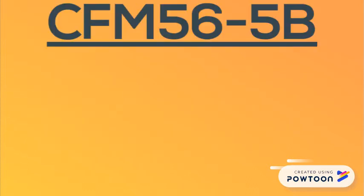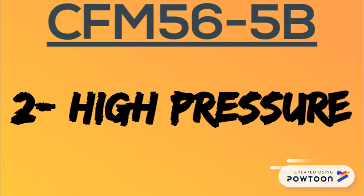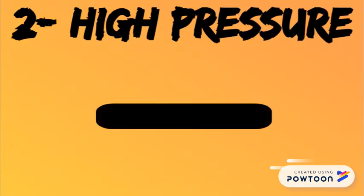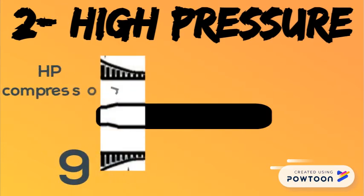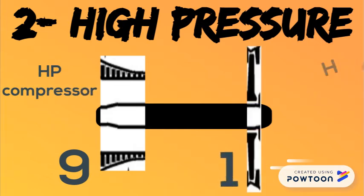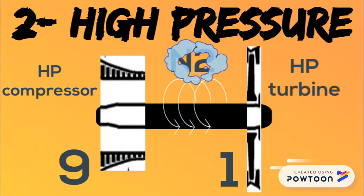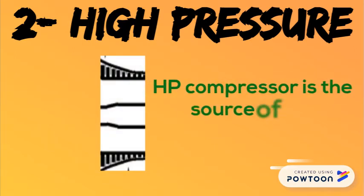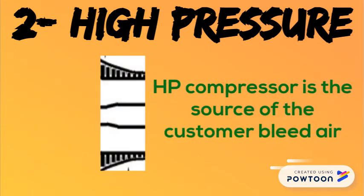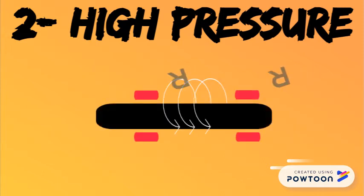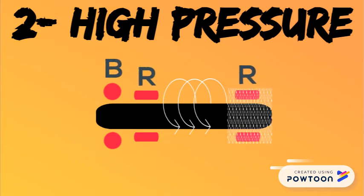Now we will move on to the high-pressure components. The main component is the high-pressure rotor, which is made up of a nine-stage high-pressure compressor driven by a single-stage high-pressure turbine. The speed of the high-pressure rotor is indicated on the E-CAM as N2. The high-pressure compressor is also the source of the customer bleed air. The high-pressure rotor is supported by roller and ball bearings, which are also lubricated and cooled.